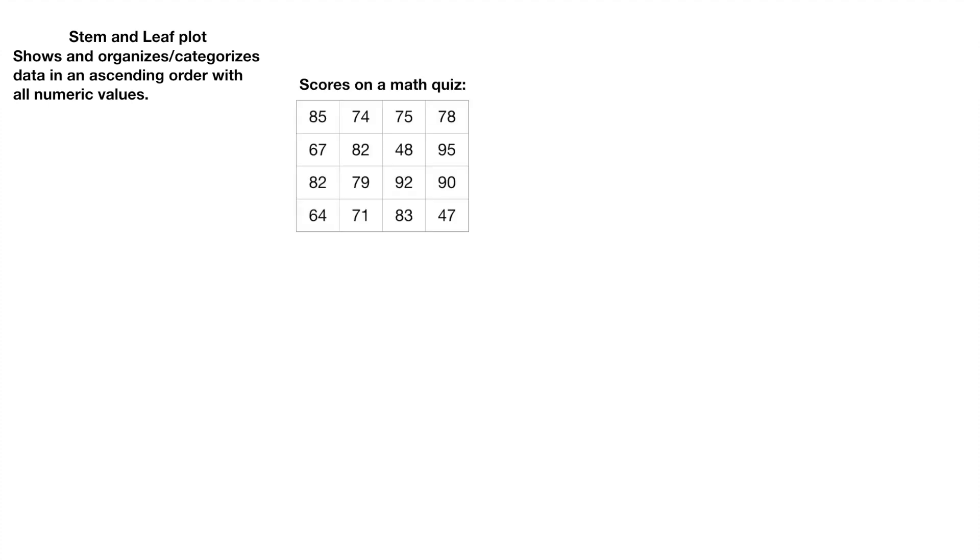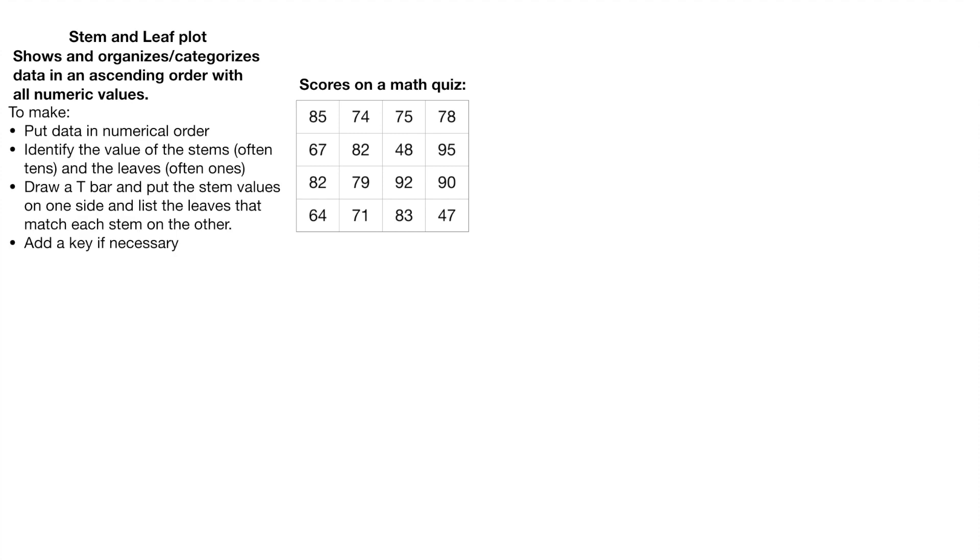And then the next two types of graphs we're going to talk about, stem and leaf plots and histograms, also somewhat similar to each other. So a stem and leaf shows and organizes, categorizes data in ascending order with all numeric values. So what that means is, let's say we had this list of scores on a math quiz, and we wanted to figure out for each of those kind of how they relate and what they look like. To do this,